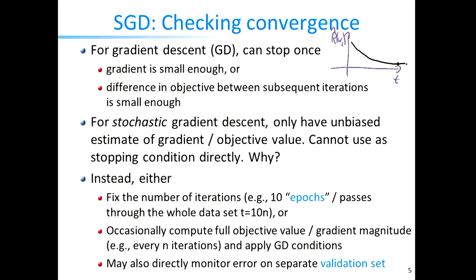In practice, what's commonly done is one of a few choices. One option is simply to run for a fixed number of iterations based on your computational budget. In practice, what often works well is to iterate over the whole dataset multiple times — say, if you have n points, you might run for a small multiple of n iterations, like 10,000 iterations for 1,000 points.